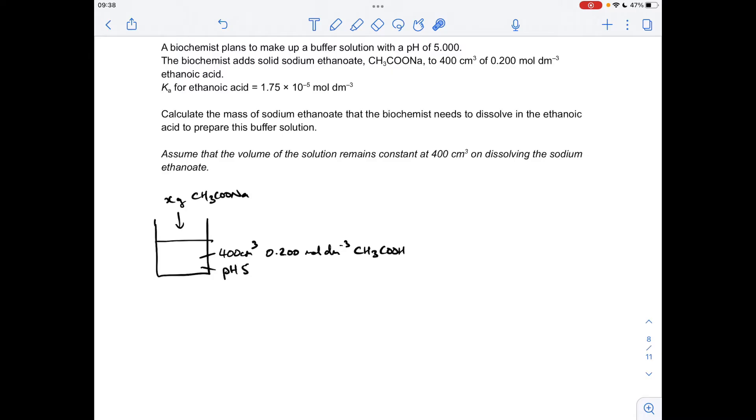Okay, so we'll make a start. If you watched a few of my videos, you'll know I like my little diagrams where I can visualize what's going on in the question. So we've got to create a buffer solution with a pH of five. The total volume of the buffer is 400 centimeters cubed, and that's initially made up from this 0.2 moles per decimeter cubed ethanoic acid. All we're doing is dissolving x grams of the sodium methanoate salt into there to generate the buffer.